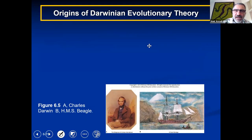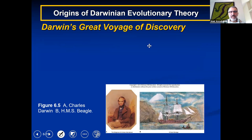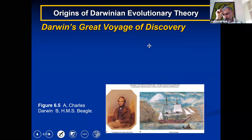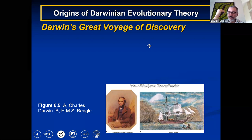A little bit about Darwin's background: at the beginning he was going to become a medical doctor, then decided to become a minister, went to a monastery for a while, then finally changed his mind and went to the University of London to study natural biology, becoming a naturalist. His family was wealthy, and one of his friends was a captain of a ship who asked if he wanted to go on a voyage for five years.